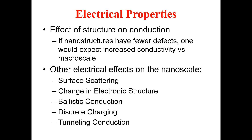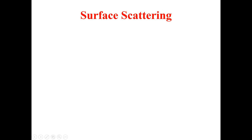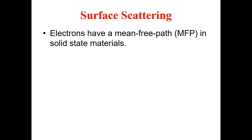Some of these effects will be studied in this lecture and others in coming lectures. The most important one for this particular lecture is surface scattering, because at the nanoscale the majority of atoms lie at the surface. Surface scattering is therefore very important regarding the electrical properties of nanomaterials. We will proceed toward surface scattering to understand its effect on the electrical properties of nanomaterials. Electrons have a mean free path in solid-state materials.